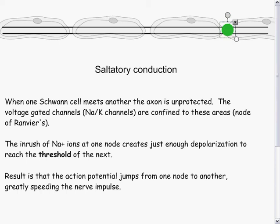To review: when one Schwann cell meets another, the axon is unprotected. The voltage-gated sodium-potassium channels are confined to these areas, known as the nodes of Ranvier. The inrush of sodium ions at one node creates just enough depolarization to reach the threshold of the next node. The result is that the action potential jumps from one node to another, greatly speeding the nerve impulse.